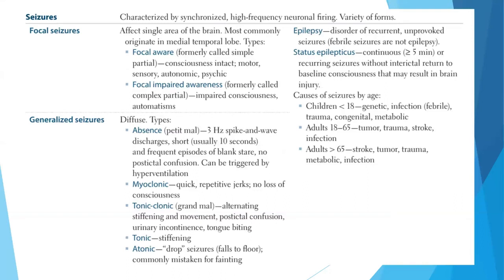The MRI often shows a lesion in the medial temporal lobe and the patient is having a focal seizure affecting the function of that region. Focal aware seizures have intact consciousness; focal impaired awareness seizures have impaired consciousness. In generalized seizures, there are different types: absence, myoclonic, tonic-clonic, tonic, or atonic. Absence seizures show three-hertz spike-and-wave discharges, frequent episodes of blank stare, and no post-ictal confusion. Both blank stare and no post-ictal confusion must be present to diagnose absence seizure. Absence seizures can be triggered by hyperventilation.